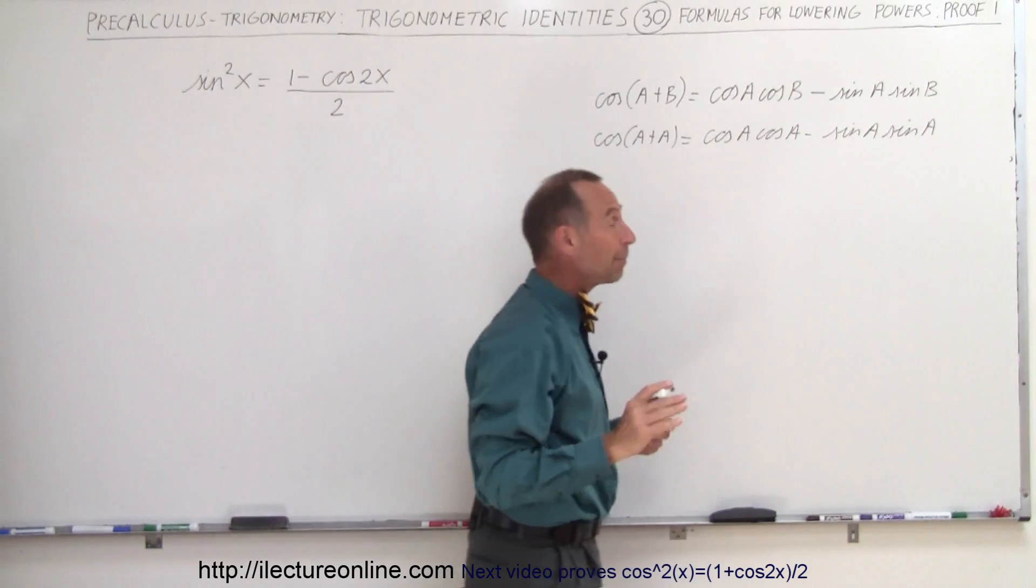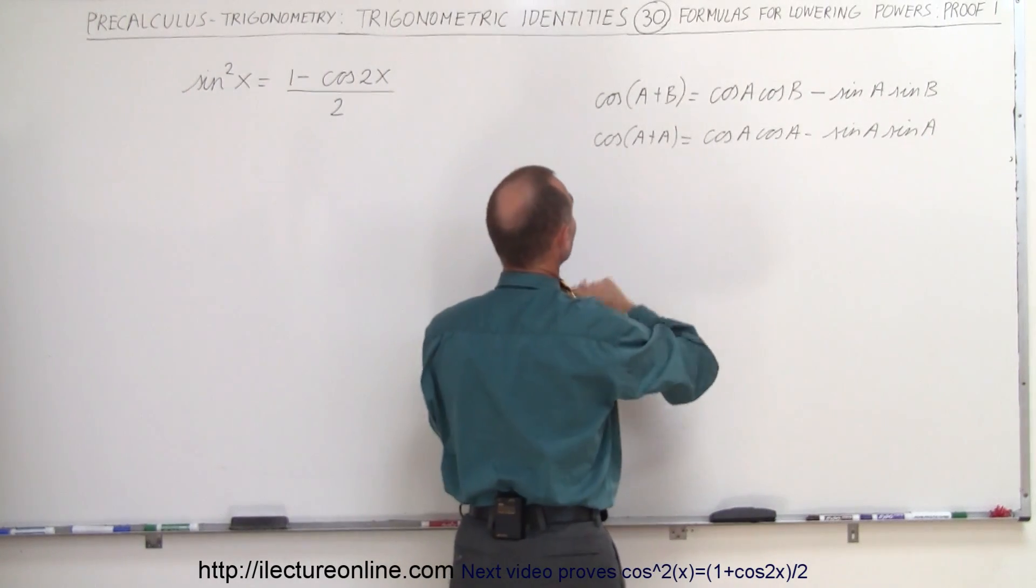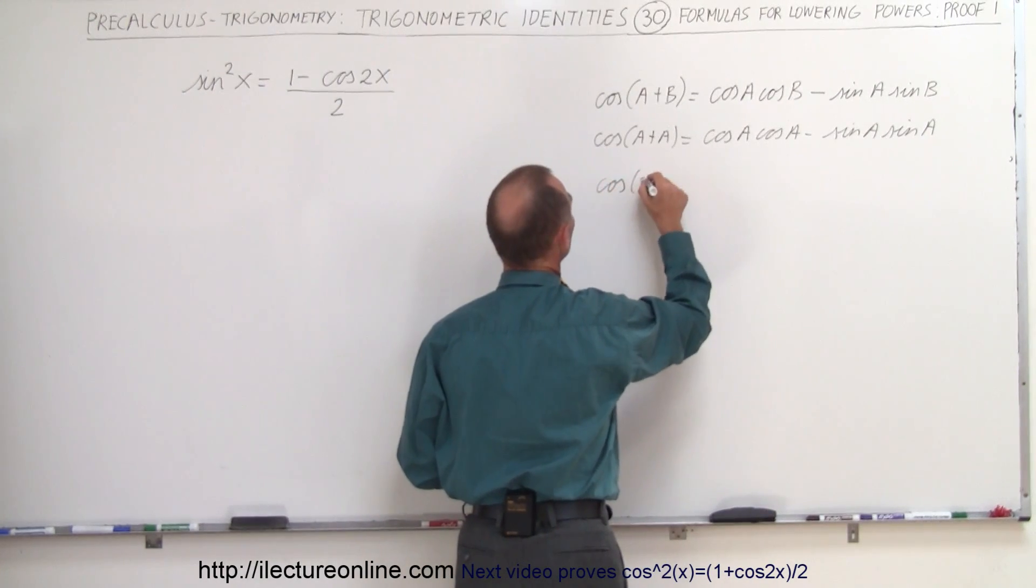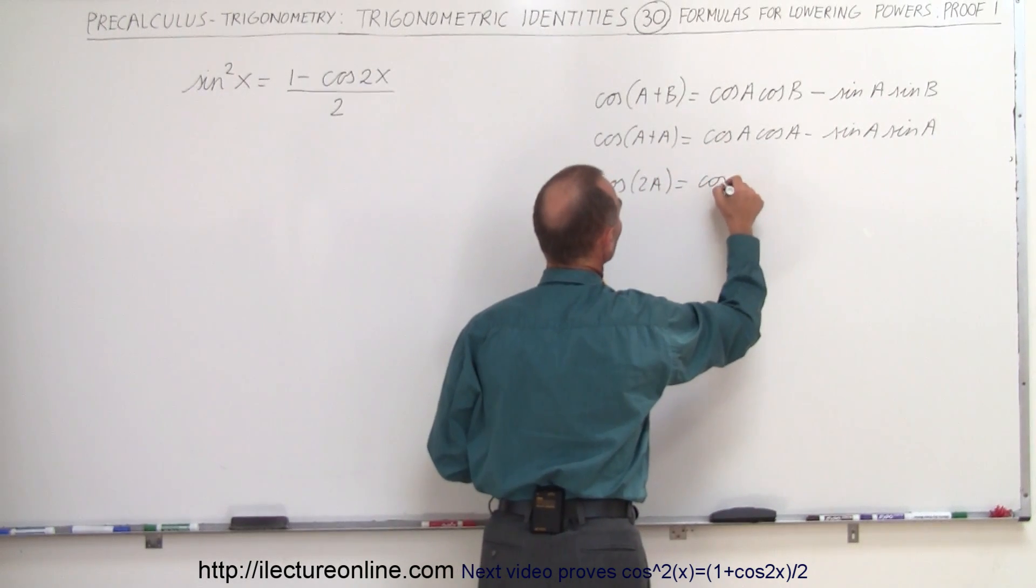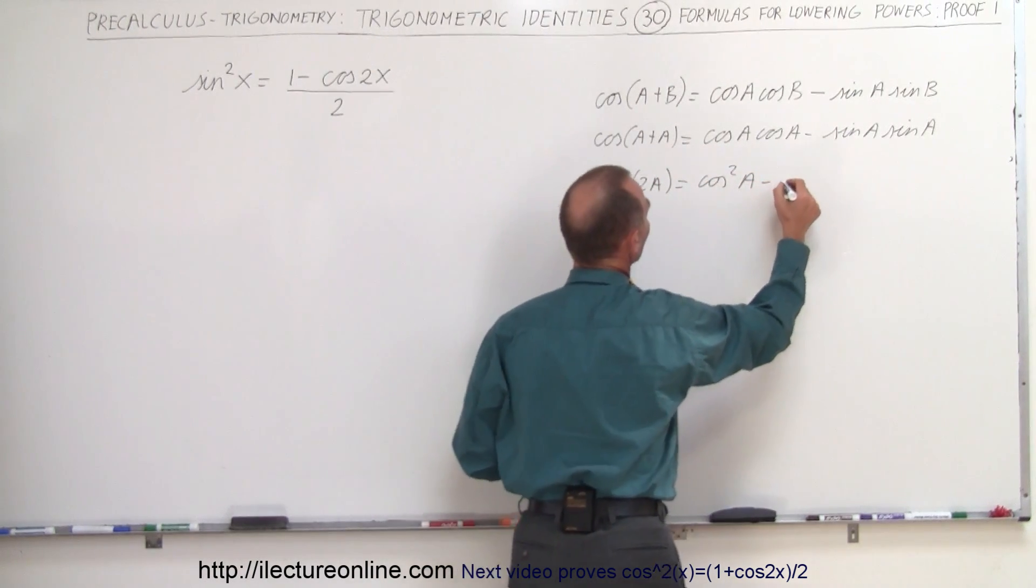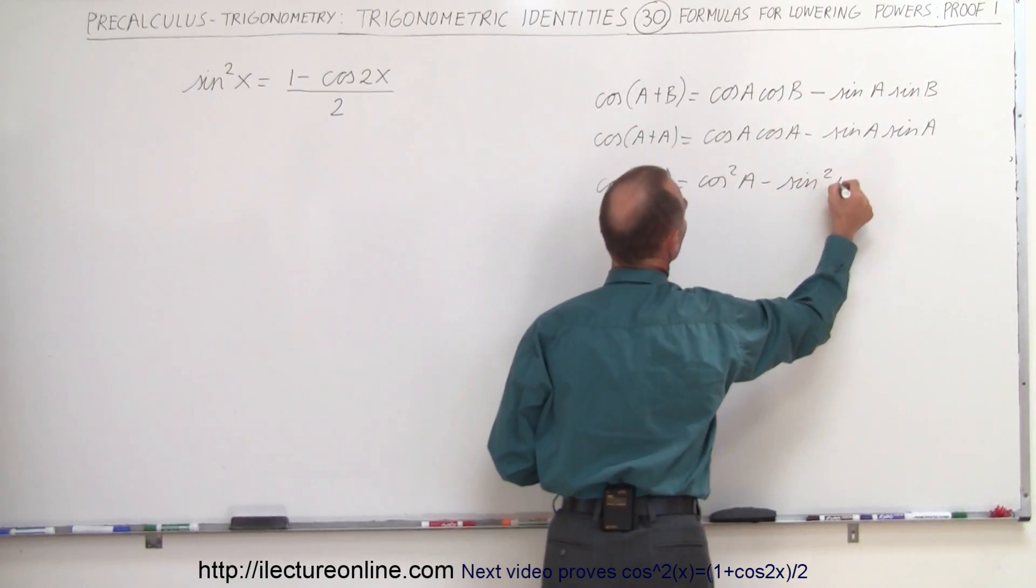And of course we can simplify that by saying that the cosine of A plus A is simply the cosine of 2A, and the cosine times the cosine is the cosine squared of A, minus the sine squared of A.